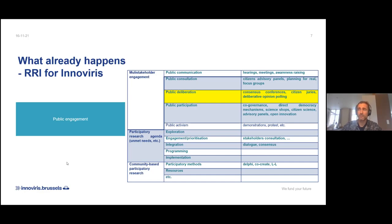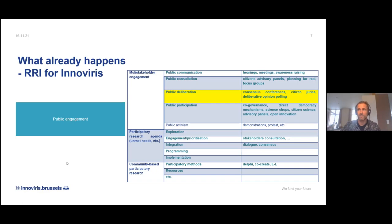We also work a lot on community-based participatory research — research methods like co-creation, where there are quadruple helix kind of projects where citizens work together with scientists, with public bodies, and with economic actors. We also work on community-based partners on research and innovation projects, defining research questions in co-creation, developing solutions whether or not in living labs — living laboratories where people experiment with solutions offered by scientists and enterprises. So that's what public engagement for us is about.